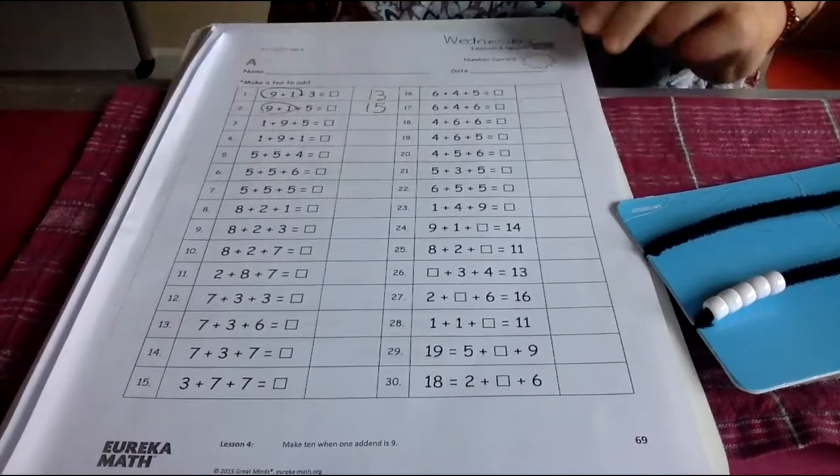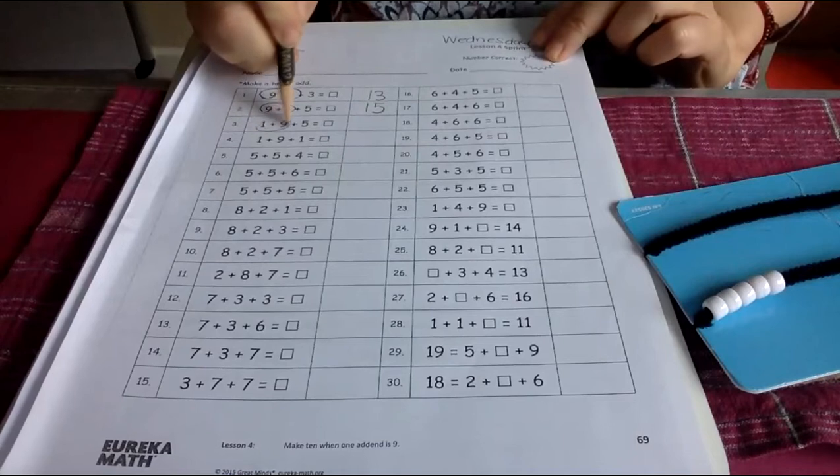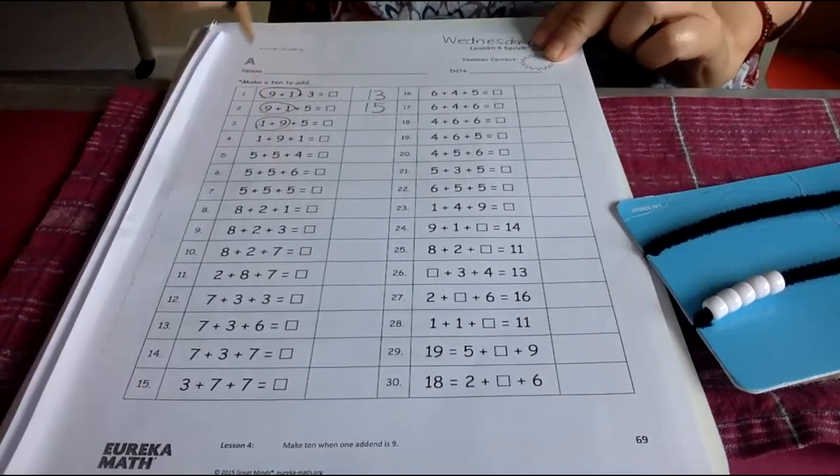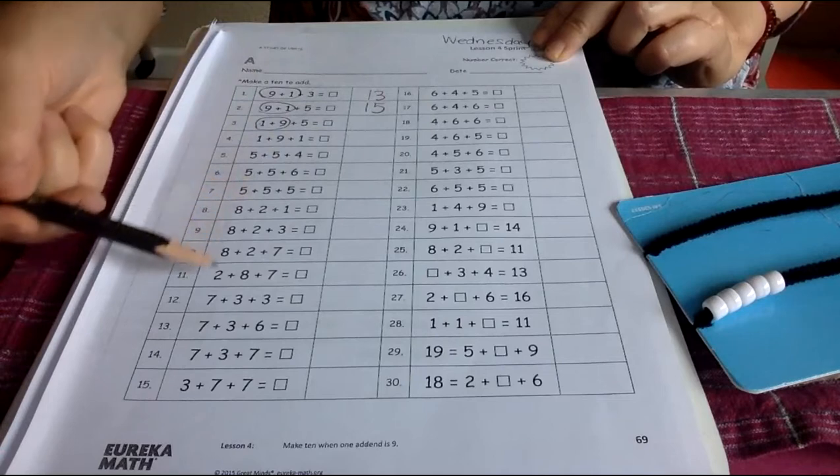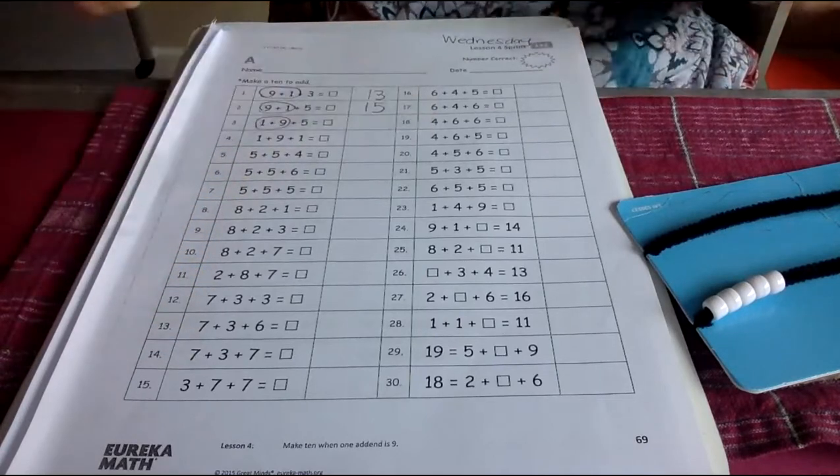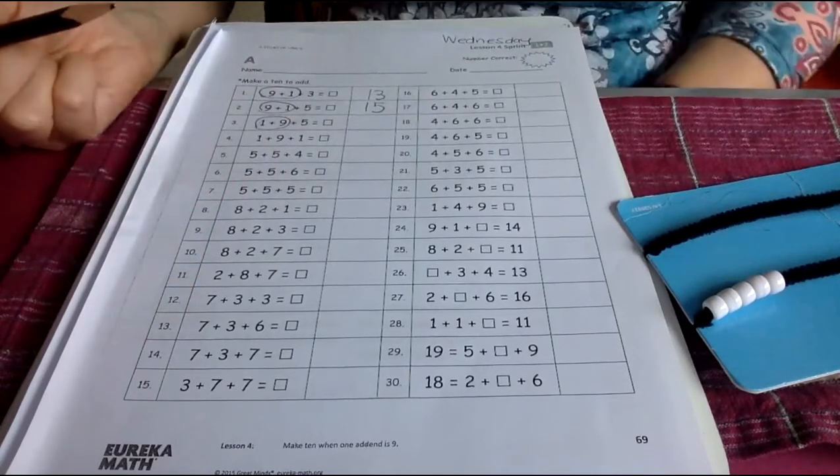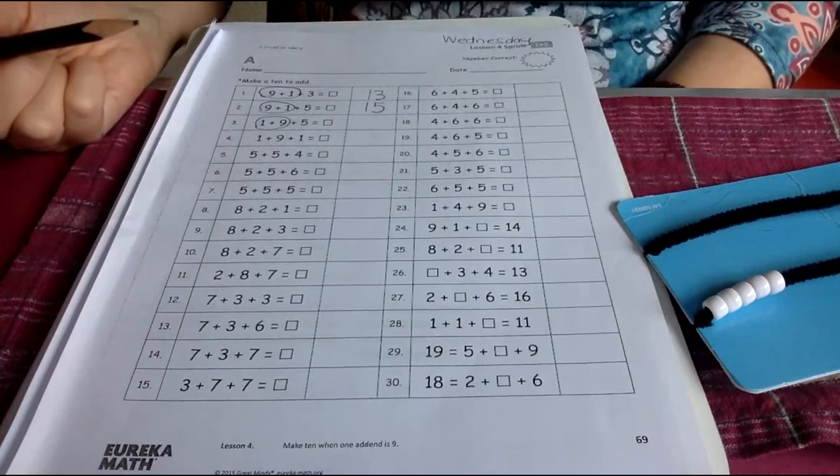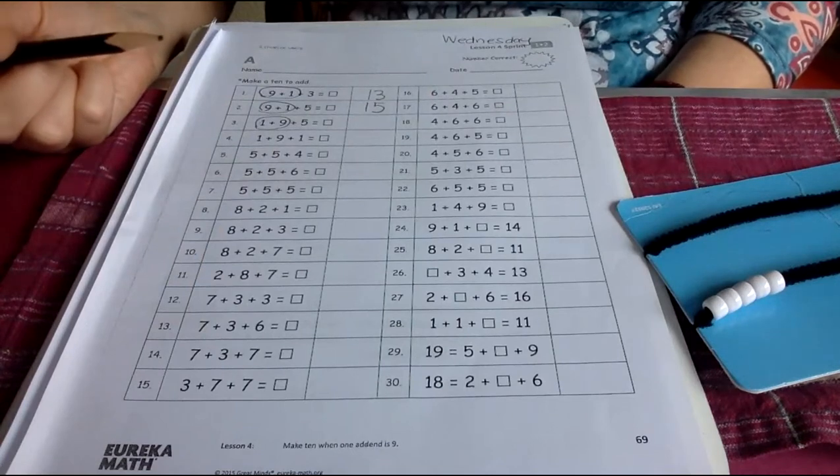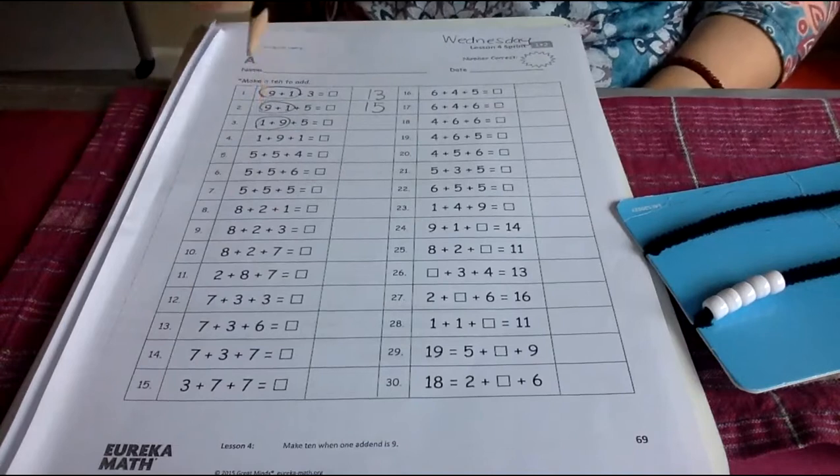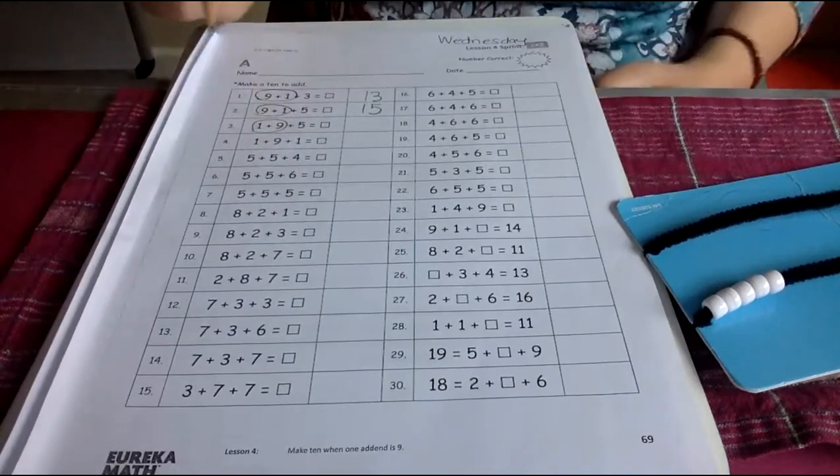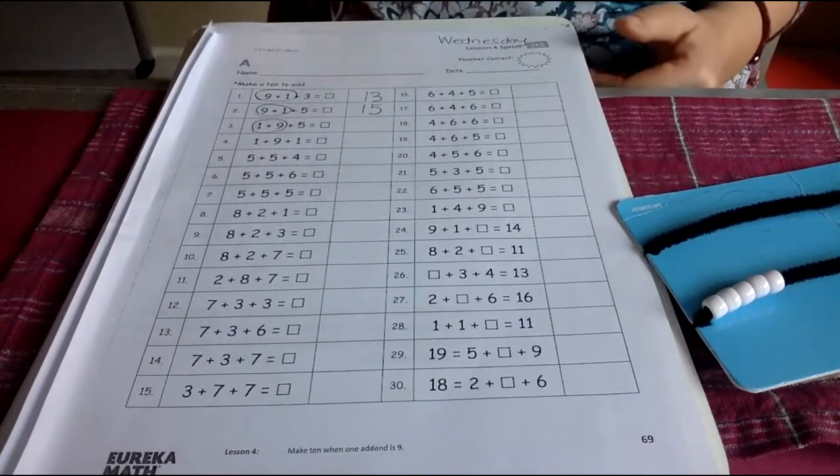We've done some of this before. So what you're doing on this sheet is finding the partners that make 10. And I think they've made it pretty easy for you on this sheet because the partners are next to each other. Later on, they'll be all mixed up and you'll have to really kind of hunt for them. But right here, they're usually the first two numbers.